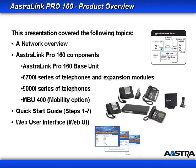In this presentation we looked at the following topics: we took a quick look at a network overview; we looked at the components that make up the Astralink Pro 160, including the base unit, a large choice of phones and the two expansion modules, and the MBU-400 and cordless handset. Then we followed the seven steps in the Quick Start Guide to install the base unit and phones, and we took a quick tour of the web user interface.